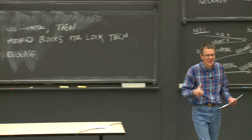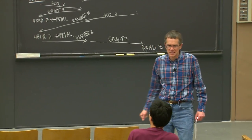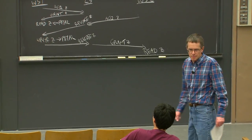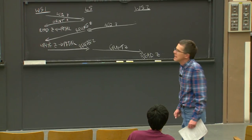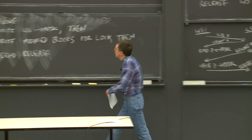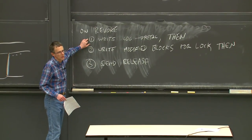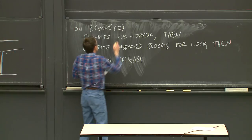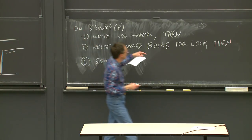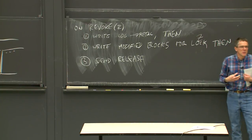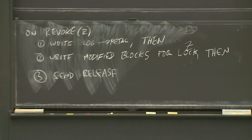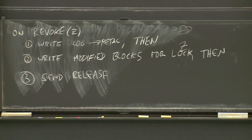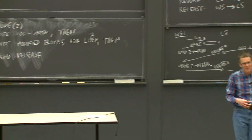A student asks: if we have a transaction that involves two locks and only one is being revoked, do you have to write the whole log? Yes — it writes the entire log. But since it's only giving up the lock for one file, it only needs to write back the data covered by that one lock, and then it can release that lock. Maybe writing the whole log is overkill — if the last modification for the revoked lock's file was an earlier log entry, you could just write the prefix of the in-memory log. But Frangipani just writes the whole thing.